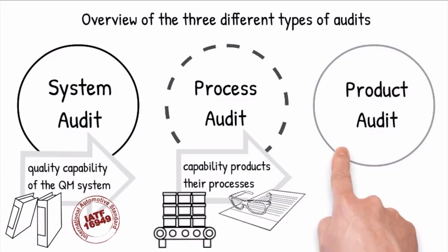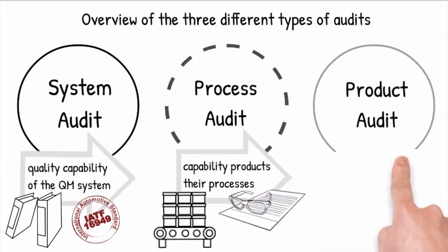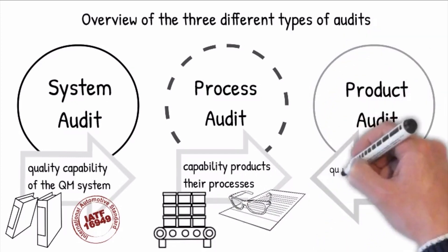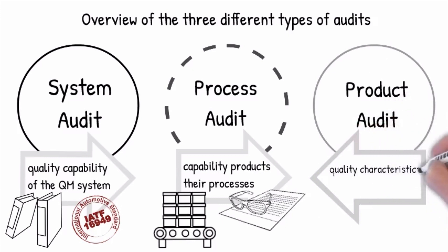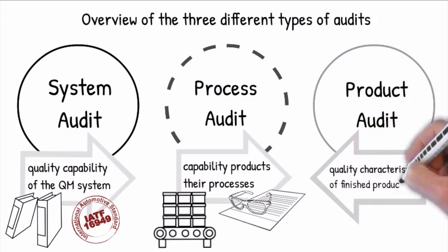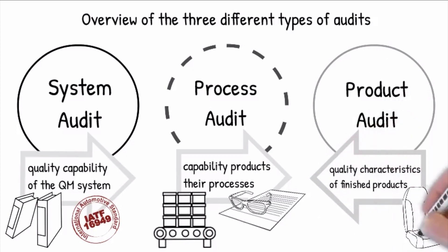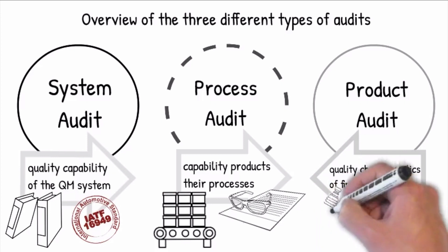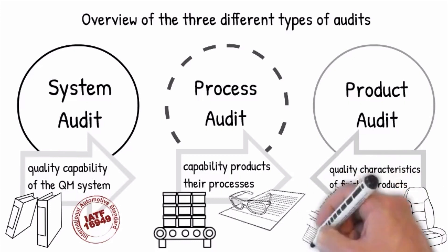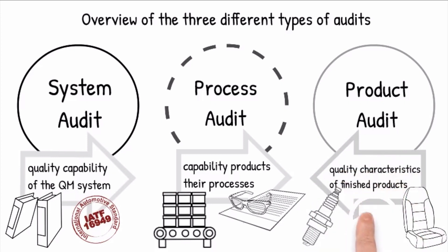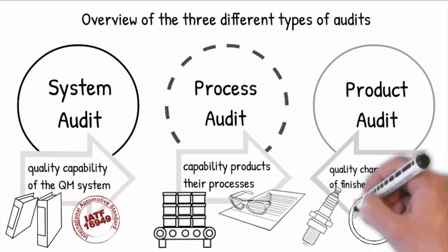The product audit focuses on checking that the product complies with the specification by assessing the quality characteristics of finished products or semi-finished products. Deviations indicate weaknesses in manufacturing processes.